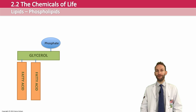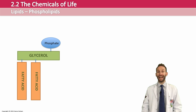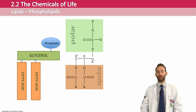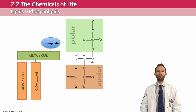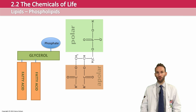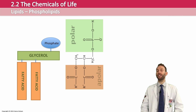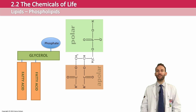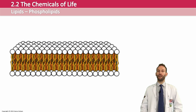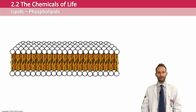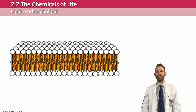Phospholipids are really, really important molecules because they are used to make cell membranes. The phosphate head is actually a polar molecule — it attracts to water, and the tails repel water; they are hydrophobic. So the heads are hydrophilic — water-loving — and the tails are hydrophobic. What that means is that the only way they can assemble themselves is for the tails to point inward toward each other and for the heads to point on the outside. And that is what makes what we call a phospholipid bilayer.